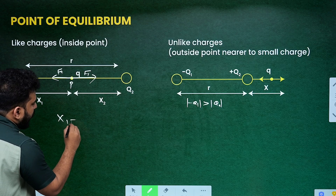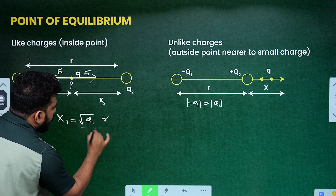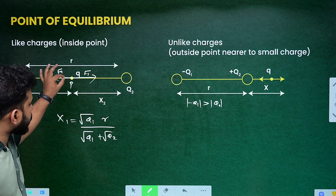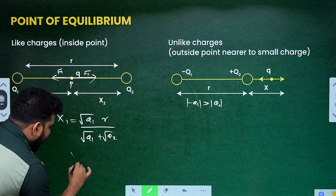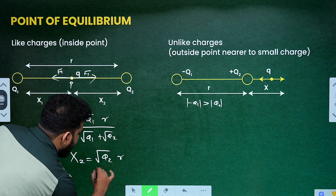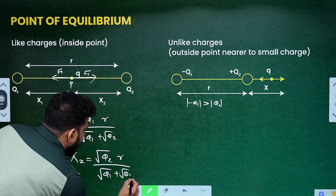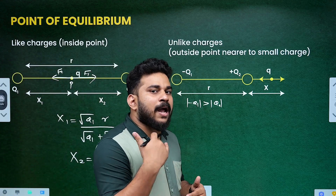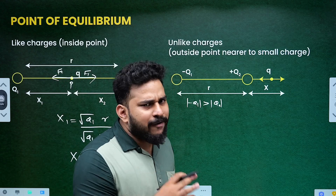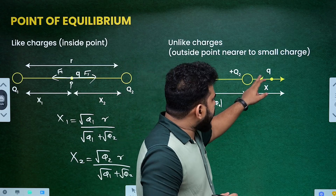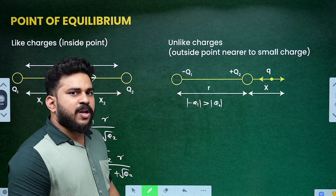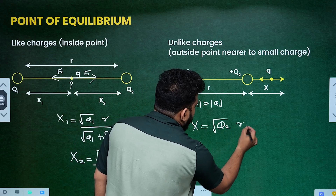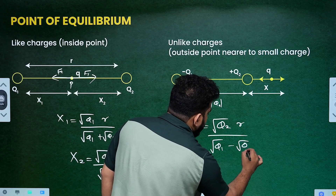X1 can be written as root Q1 times R divided by root Q1 plus root Q2. X2 can be written as root Q2 times R divided by root Q1 plus root Q2. This is the relation.